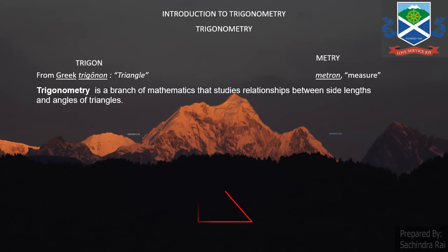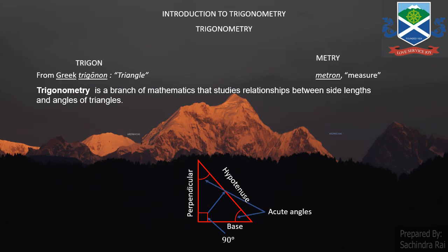Let us take this triangle here — a right angle triangle. This angle is 90 degrees, that is why it is a right angle triangle. The side opposite to this 90 degree, or the longest side, is called the hypotenuse, and the other two sides are called the perpendicular and the base. These angles that we see are the acute angles, and they can be represented by different letters or Greek letters — alpha, beta, gamma, theta, etc. Sometimes we represent them with A, B, C, or English alphabets also.